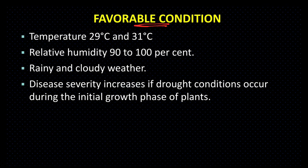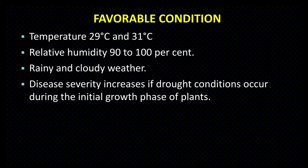Favorable conditions for disease: Temperature 29 to 31 degree centigrade, Relative Humidity 90 to 100%, rainy and cloudy weather. Disease severity increases if drought condition occurs during the initial growth phase of the plant — अगर पौधा छोटा हो और drought आए, तो पौधे का growth कम होता है, disease resistance power कम होता है, इसलिए disease ज़्यादा आती है।